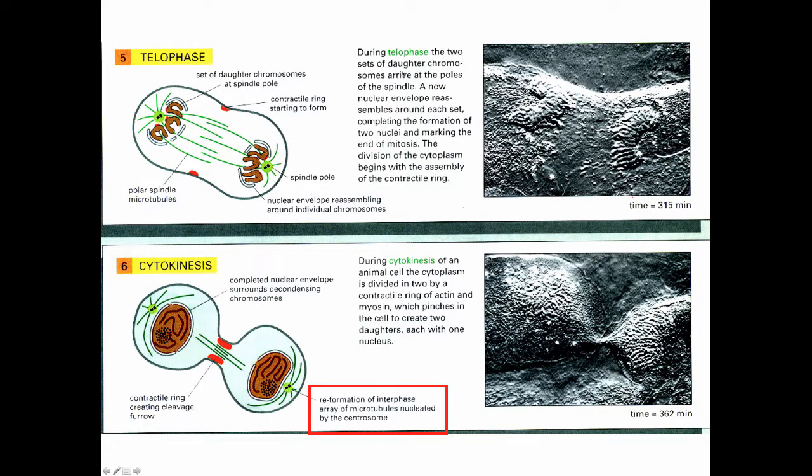During telophase, the two sets of daughter chromosomes arrive at the poles of the spindle. A new nuclear envelope reassembles around each chromosome set, completing the formation of two nuclei and marking the end of mitosis. The division of the cytoplasm begins with the assembly of the contractile ring. During cytokinesis in an animal cell, the cytoplasm is divided in two by the contractile ring consisting of actin and myosin, which pinches the cell into two daughter cells.